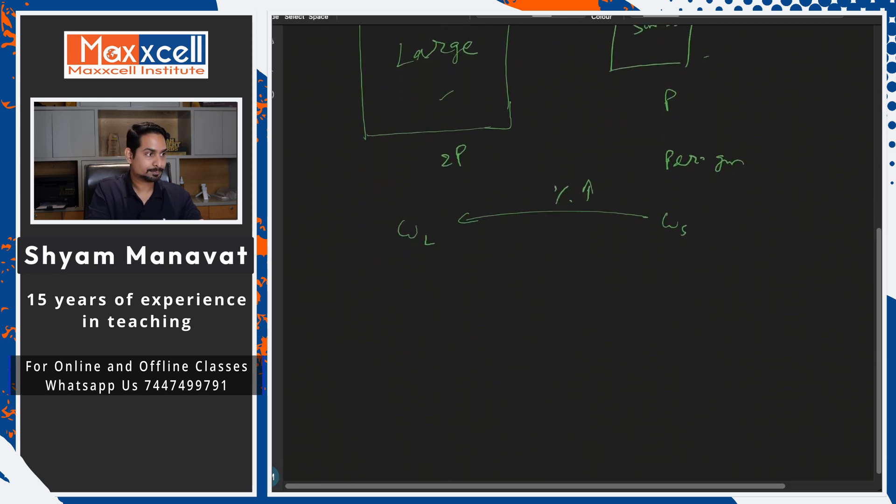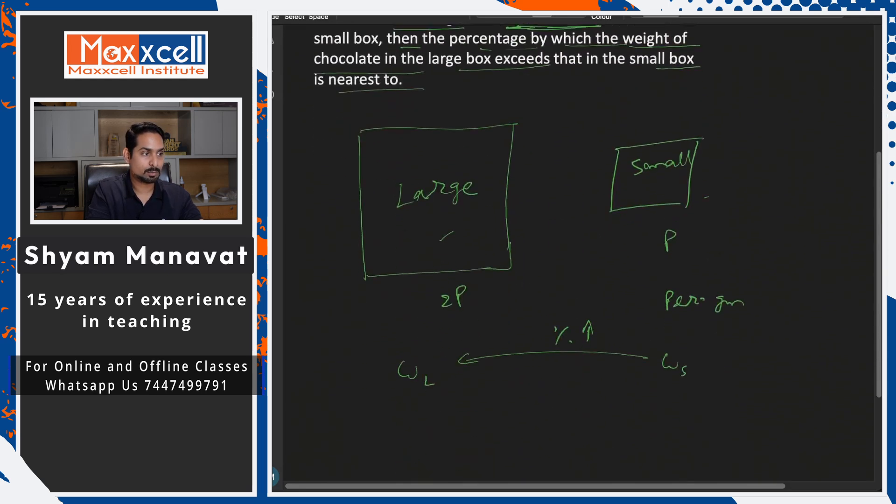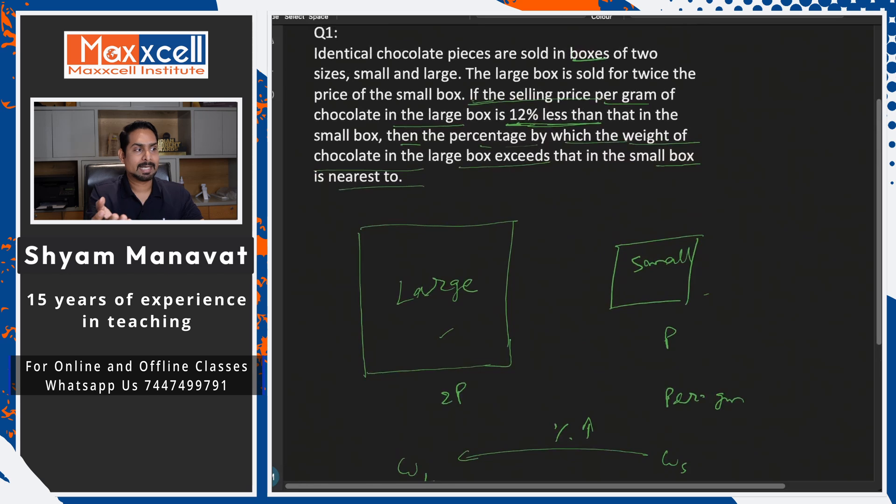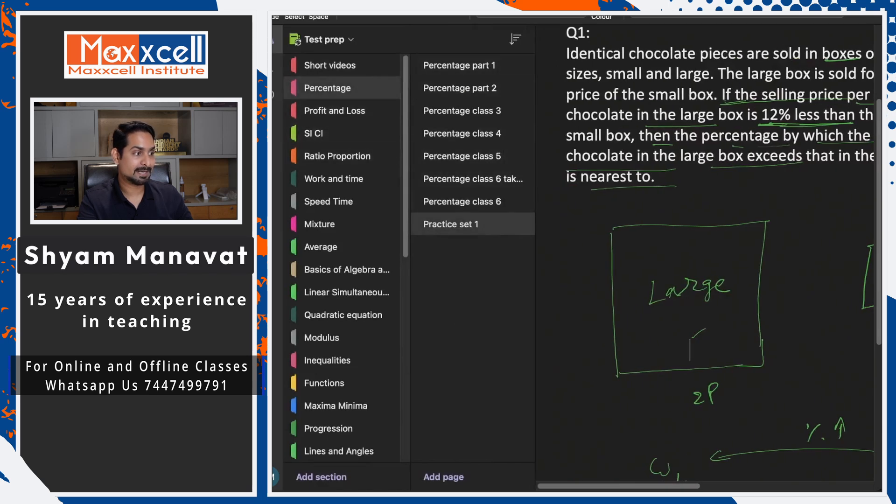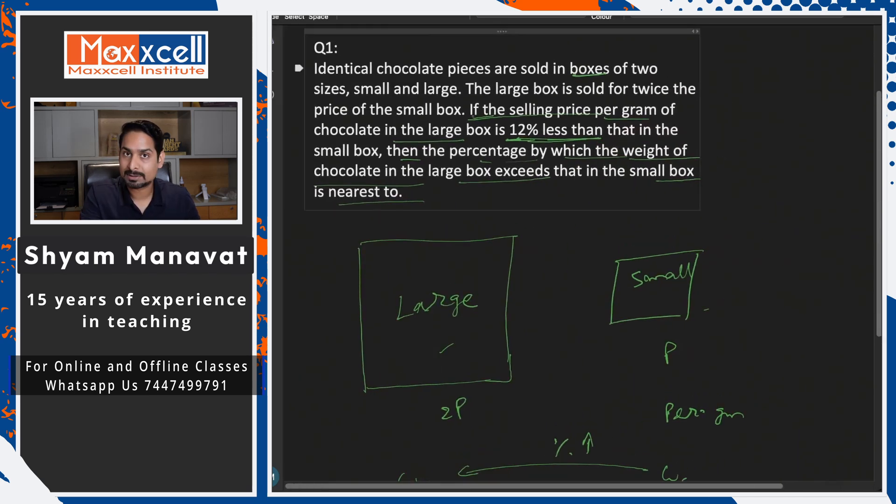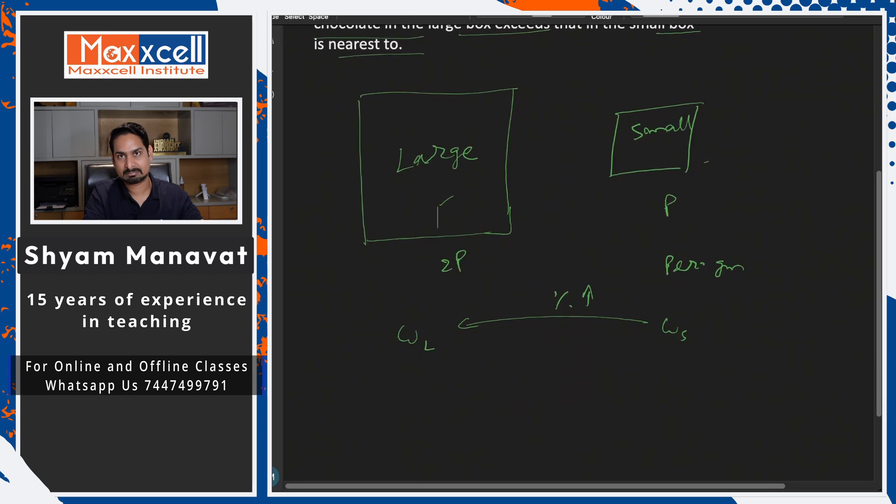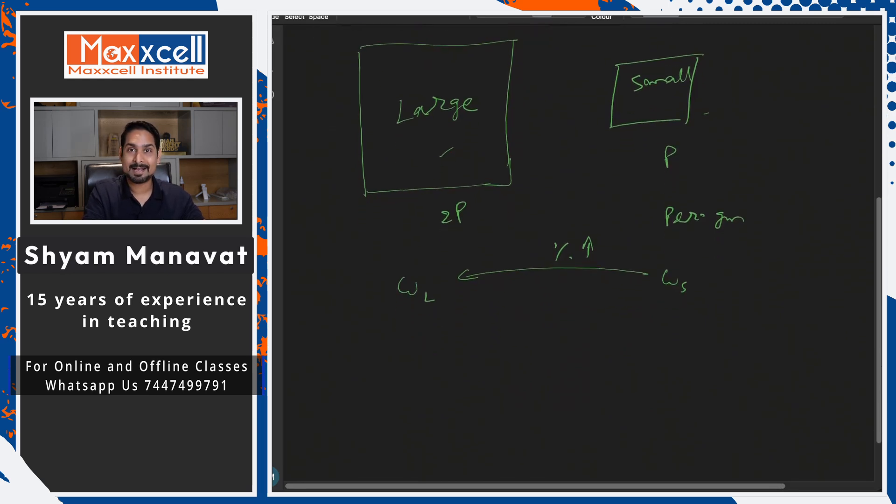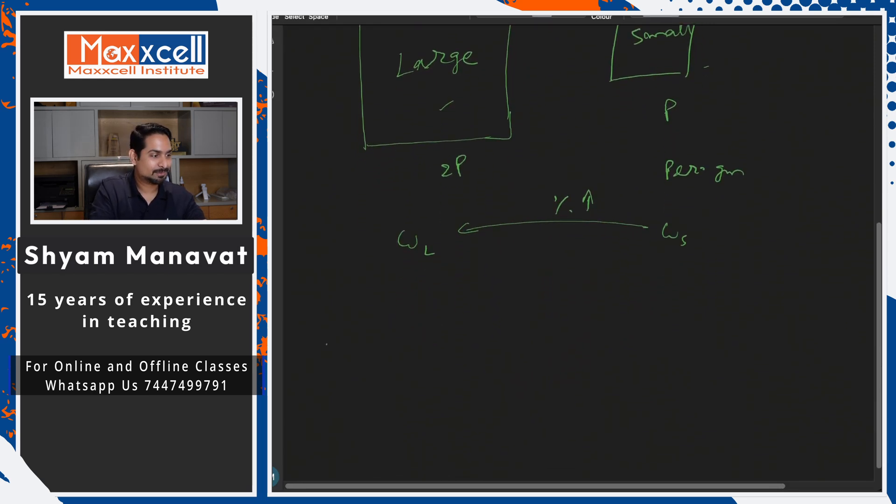Now you understand the solution. I always say that even in the percentage concept builder videos, I have discussed that when the question is in percentage, option is also in percentage, then we can assume value instead of assuming variable and look very ugly P, W. So let us assume some numbers.